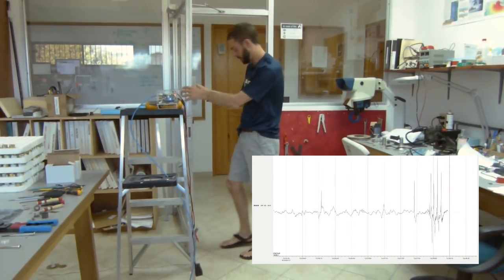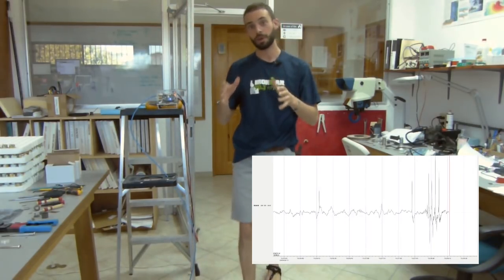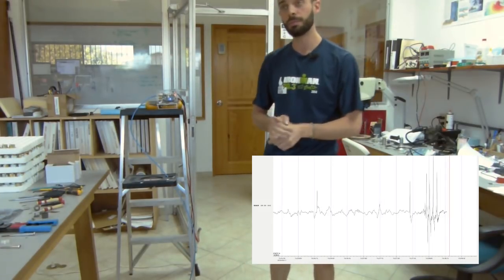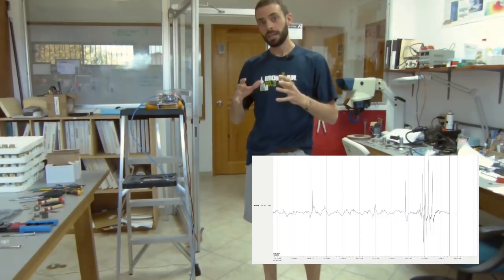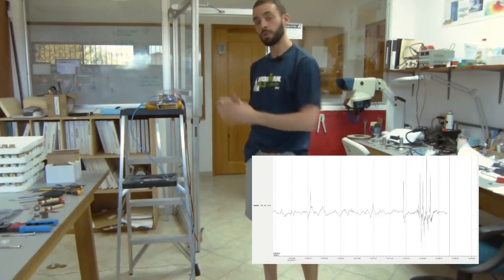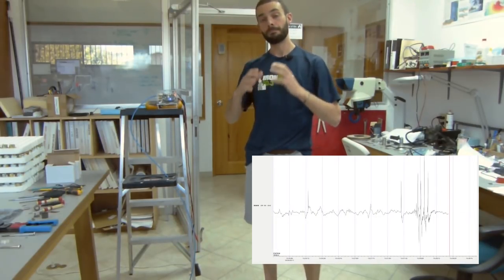You should see the changes in atmospheric pressure inside the room on the data. Next, we'll take the Raspberry Boom and demonstrate that it responds to changes in barometric pressure.